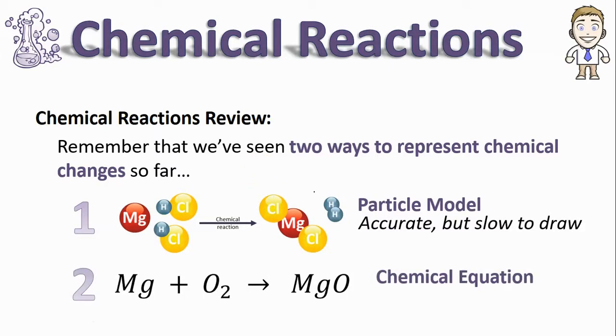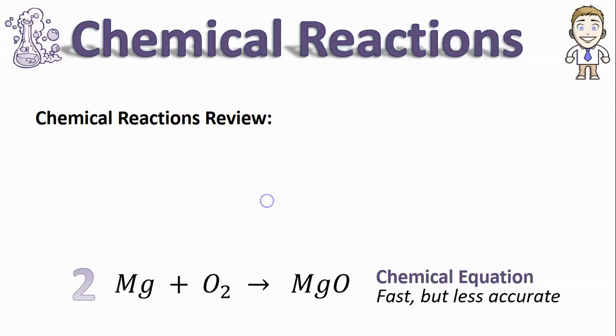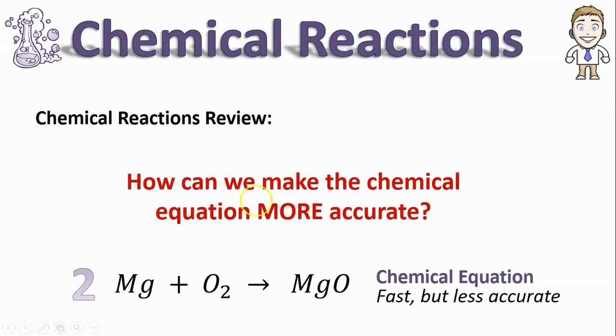In the last set of videos we saw chemical equations which use formulas, so it's a lot faster but less accurate for a couple reasons. This video is going to ask the question: how could we use the speed of the chemical equation but make it more accurate?